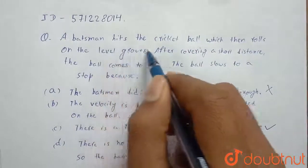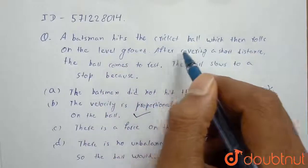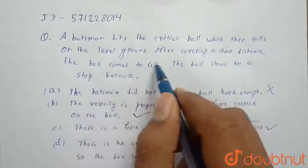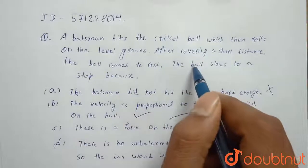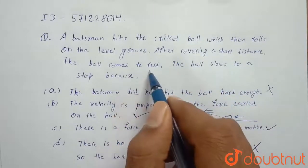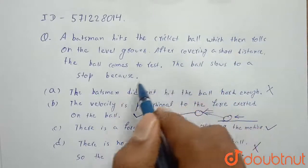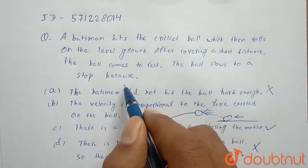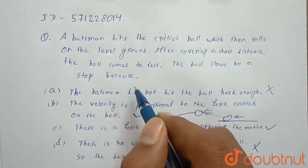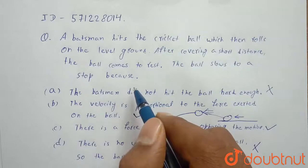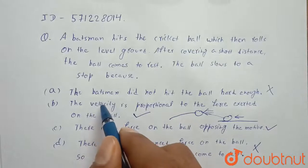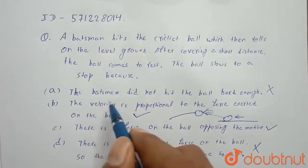A batsman hits the cricket ball, which then rolls on the level ground. After covering a short distance, the ball comes to rest. The ball slows to a stop, and we have to find the reason why the ball is stopping.